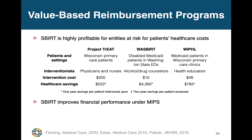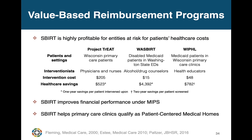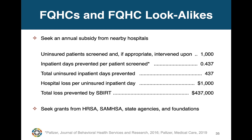SBIRT can also help your clinic perform better in Medicare's Merit-Based Incentive Payment System, or MIPS, and it can help your clinic qualify as a patient-centered medical home, which can help you get higher reimbursement rates from some health plans. FQHCs might be able to seek annual subsidies from local hospitals because SBIRT would help those hospitals avoid uncompensated and poorly compensated admissions and ED visits by uninsured and poorly insured patients.